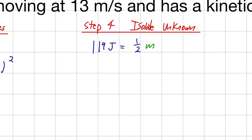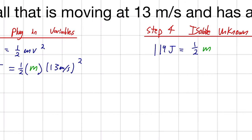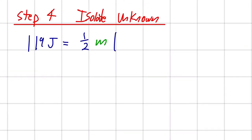One-half m. And then, our 13 meters per second squared, that's going to give us 169 meters squared per second squared.